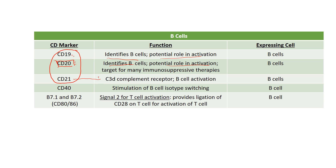CD21 actually does have a known role — it's the C3D complement receptor, which has something to do with complement activation and because of that can also have a role in B cell activation. CD40 is also expressed on B cells, and when it is ligated by CD40 ligand on the T cell, it induces class switching so the B cell can go from being an IgM-producing plasma cell to producing IgG, IgA, or IgE, allowing it to produce different types of antibodies specific for the type of immune response needed.